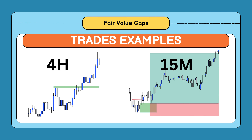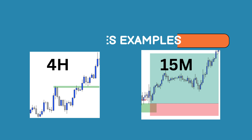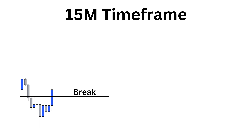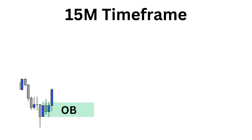This is a Euro AUD trade example. On the 4-hour timeframe, the market is at support. On the 15-minute timeframe, the market is changing character. So this is our fair value gap, this is our order block, and this is our winning trade.